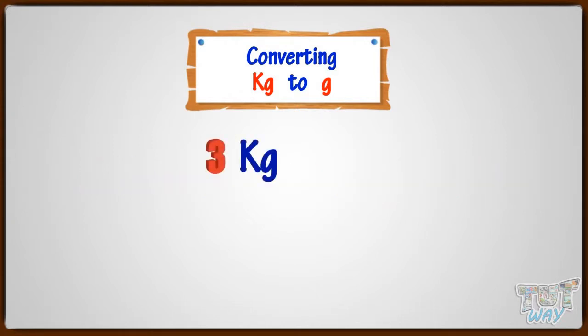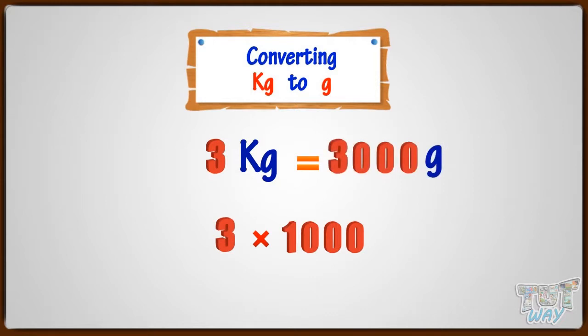Three kilograms will be equal to how many grams? Three will be multiplied with 1000. Whenever we have to convert kilograms to grams, we always multiply with 1000 to convert kilograms to grams. So, 3 kilograms equals 3000 grams.